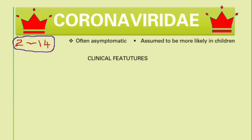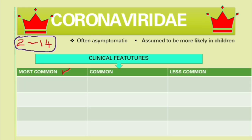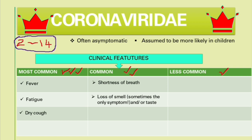Asymptomatic cases are more likely in children, considering the number of children infected. If symptoms are present, they are divided into three groups. Most common symptoms include fever, fatigue, and dry cough. Common symptoms include shortness of breath or dyspnea, and anosmia — loss of smell, which is sometimes the only symptom. Taste is also affected, as taste is 90% smell.